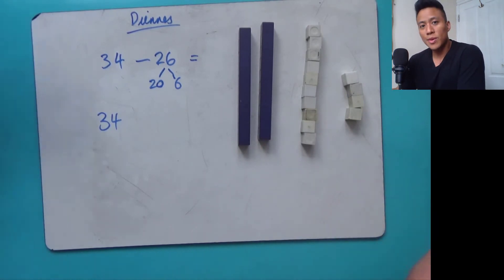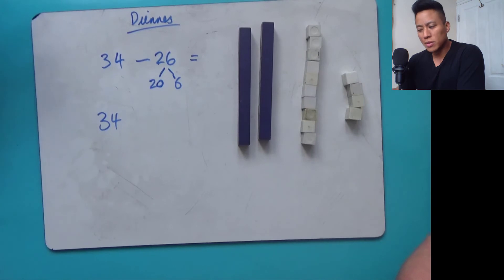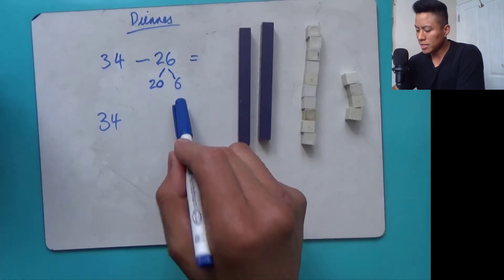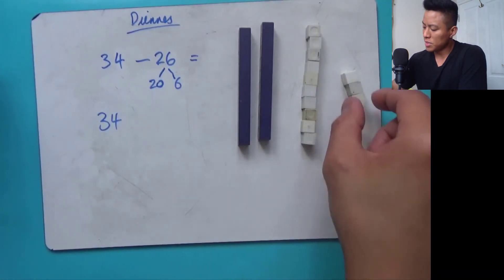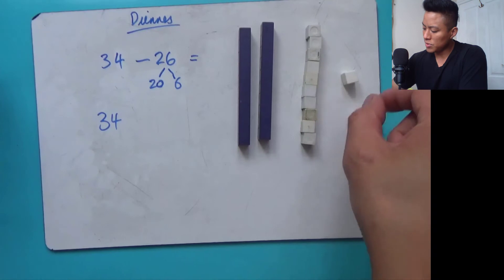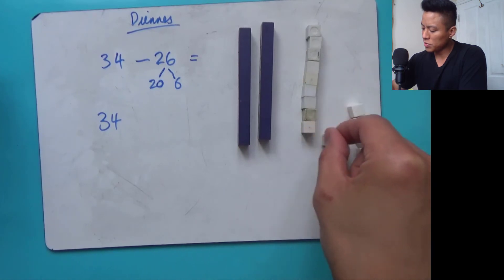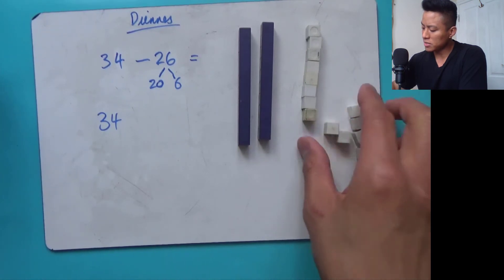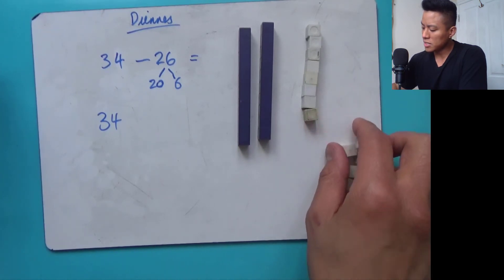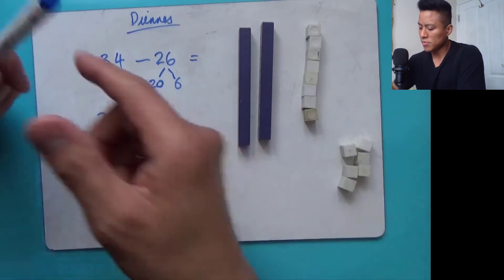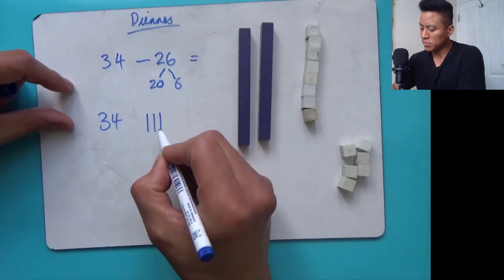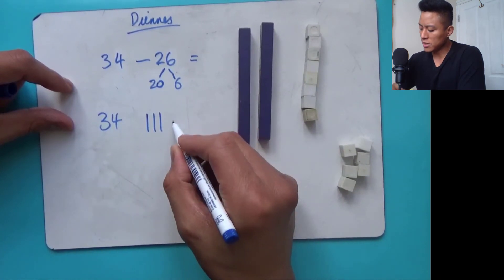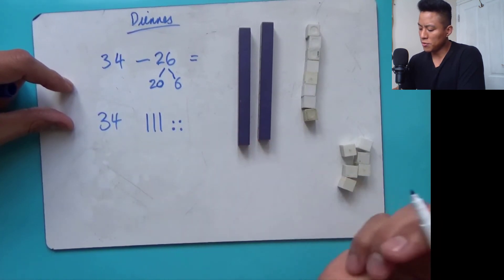Now we can subtract six: one, two, three, four, five, six. Easy peasy. So what would that look like when we're drawing it out? Three tens and four ones.